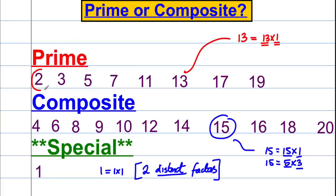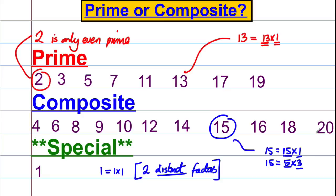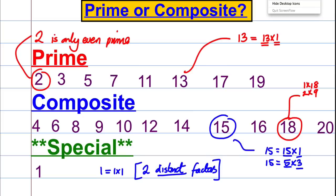Just want to point out one other thing: two is a really interesting number because two is the only even prime. All the other primes are odd. Obviously all other even numbers must be composite because they can be written as two times something — for example, eighteen is two times nine because it's even, so two is a factor of it, meaning it must be composite. So two is very special. That's all you need to know about prime numbers and composite numbers. Hope you found that video useful — thanks loads for watching, catch you again soon.